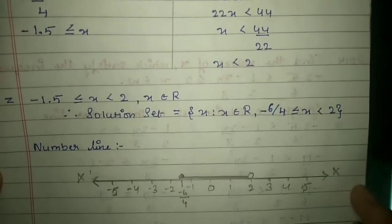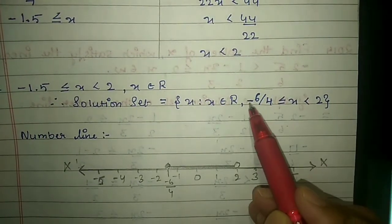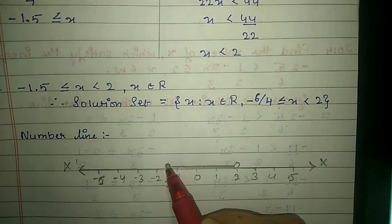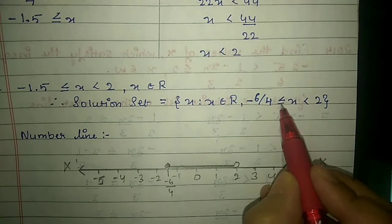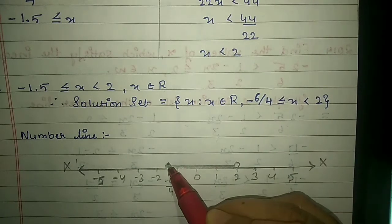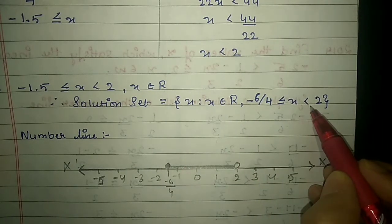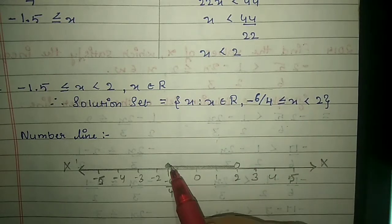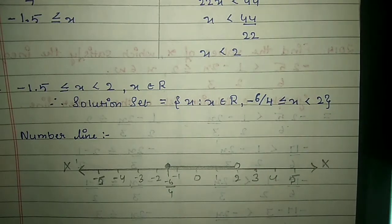Represent on the number line. Mark minus 1.5 — since the equal to symbol is present, use a solid circle. On the other side, only the less than symbol is present, so mark a hollow circle at 2. Join both points with a line.